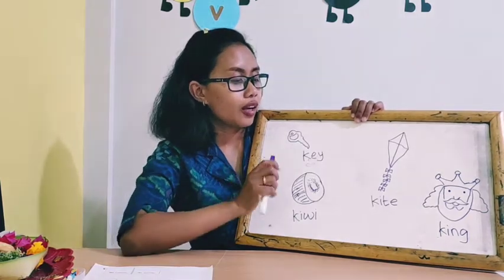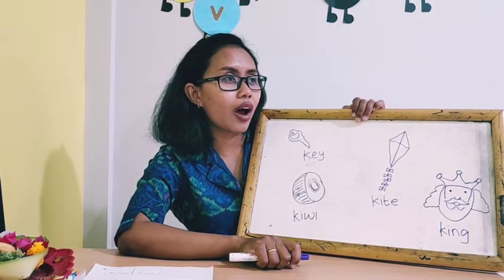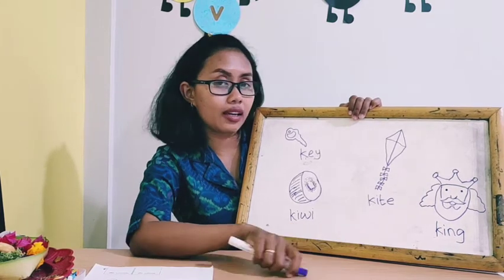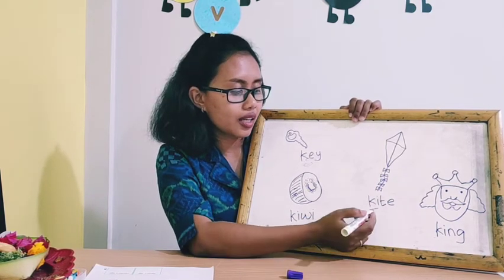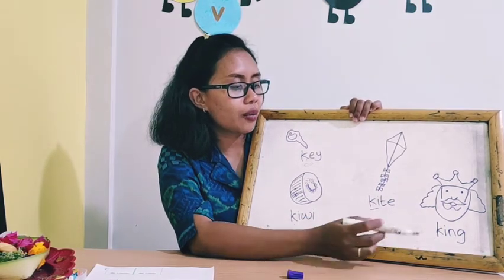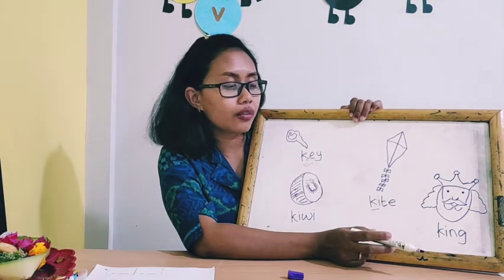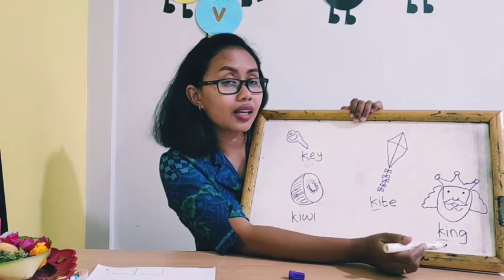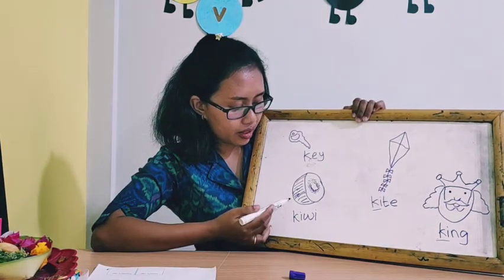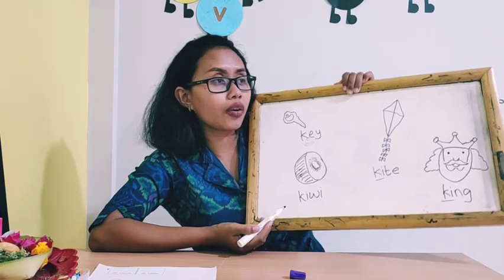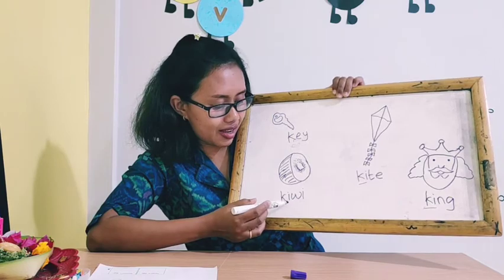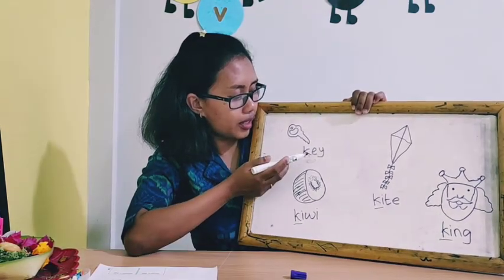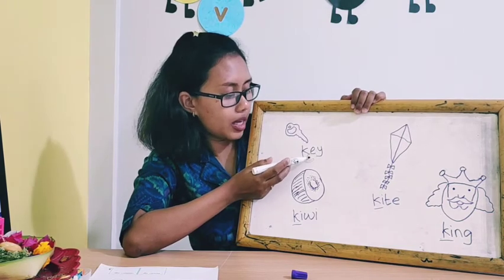Who knows what is the beginning sound of kite? The beginning sound of kite is K. How about king? The beginning sound of king is K. How about kiwi? The beginning sound of kiwi is K.